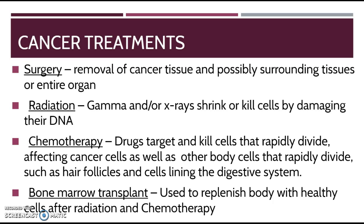Here's a variety of different cancer treatments, and different treatments target different parts of cancer. Surgery is the removal of cancer tissue and possibly the surrounding tissues or the entire organ. There's also radiation, which uses gamma or X-rays to shrink cells by damaging their DNA. And there's chemotherapy, which you've probably heard of — these are drugs that target and kill cells that rapidly divide, as well as other body cells that rapidly divide, like hair follicles or cells lining the digestive system.